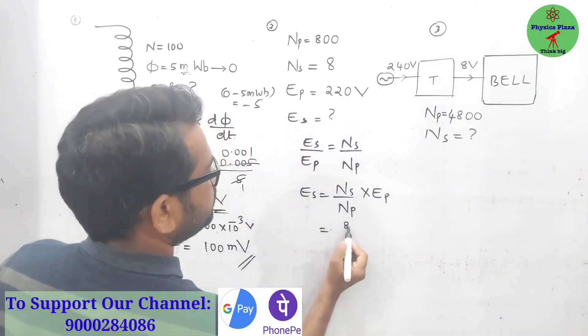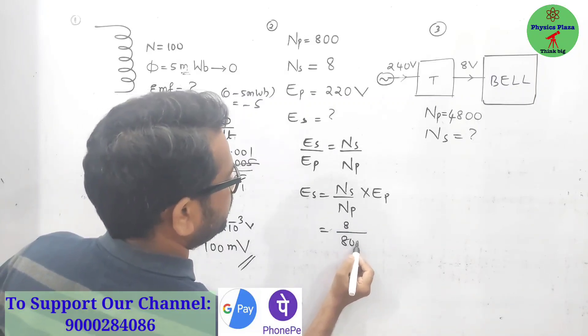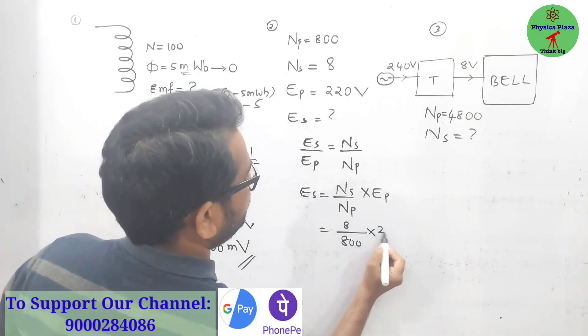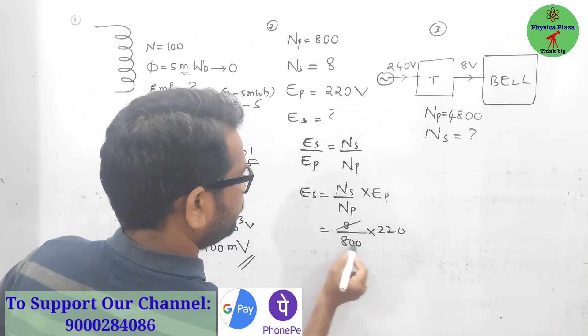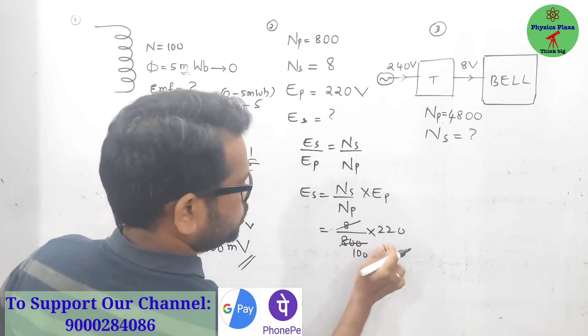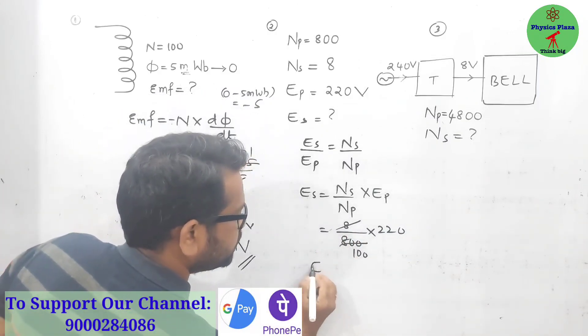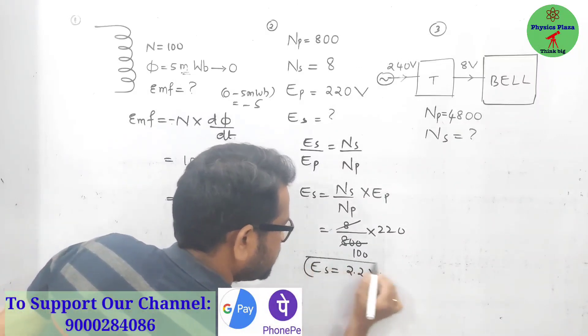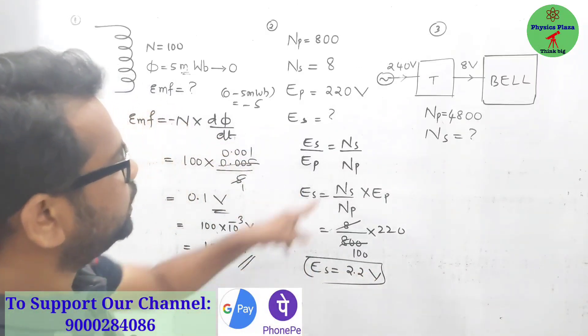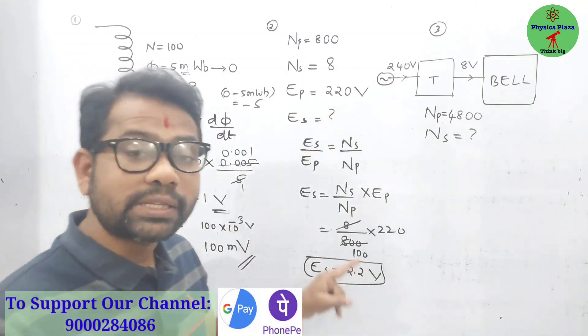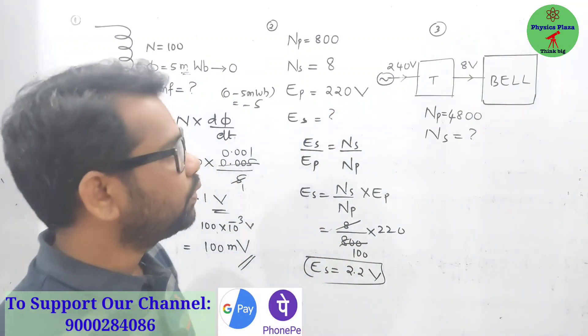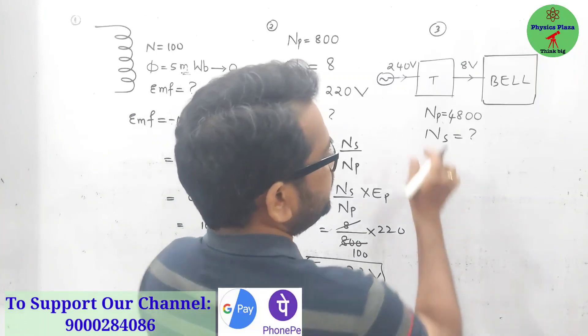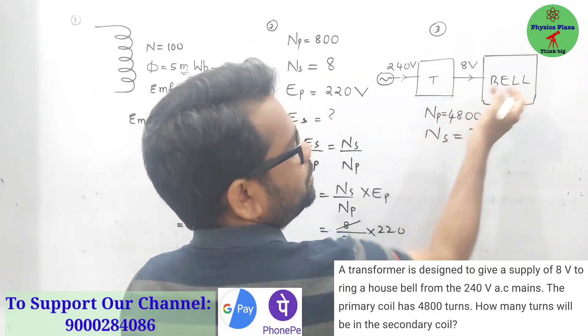Ns is 8 by 800, and Ep is 220. So 8 by 800 is 1 by 100, 220 by 100 is 2.2. So EMF will be 2.2 volt. This much EMF means it is reduced, so it is a step-down transformer.